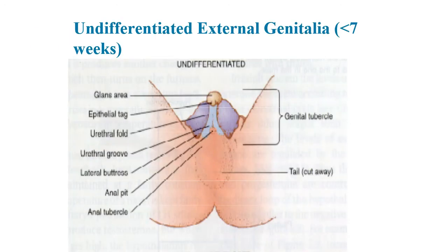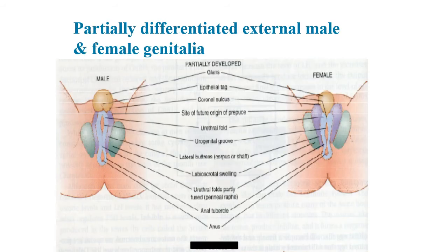At seven weeks, the external genitalia is still undifferentiated. Pay attention to the color coding as we look at the next slides showing sexual differentiation. There's really no sexual differentiation yet — just some beginnings of regions but generally just an undifferentiated general area. By about 11 weeks, you start to see differentiation occurring. The yellow region — the glans — becomes slightly larger in males with the urethral tag inside of it, whereas in females the urethral tag falls below. The light blue, dark blue, and green regions start to differentiate but we don't have full differentiation by this point.